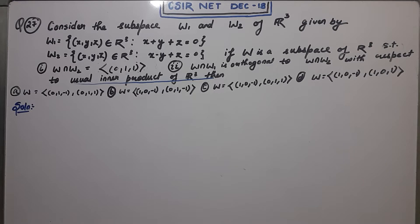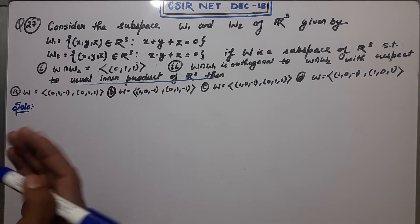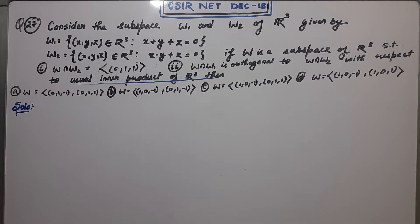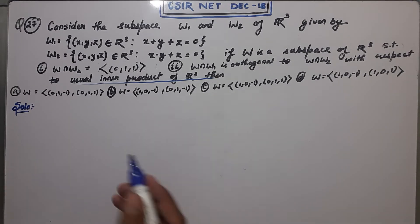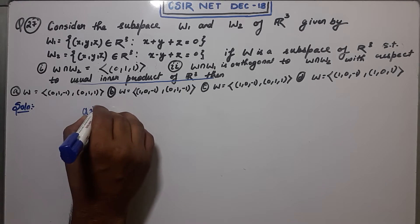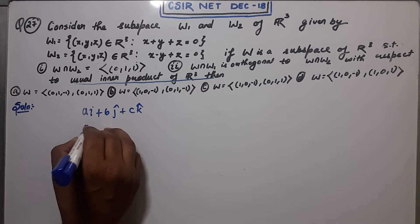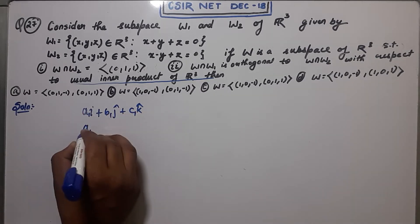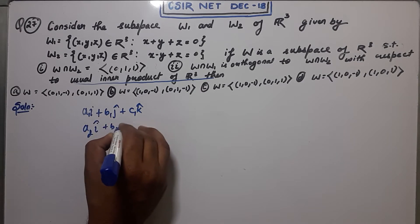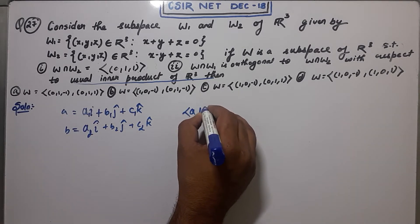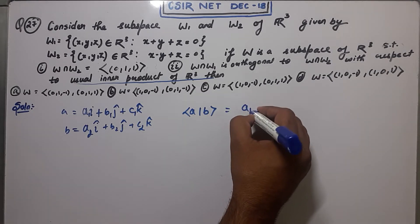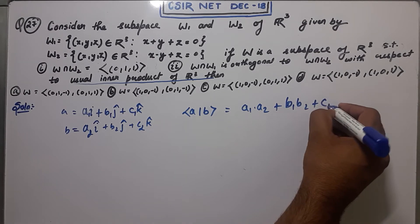In order to solve this question you must know what an inner product is — you can look in any book for the definition. For convenience, in the real system R-cube, the usual inner product is actually the dot product. So suppose you have two vectors A and B in R-cube; the inner product of A and B is the dot product.